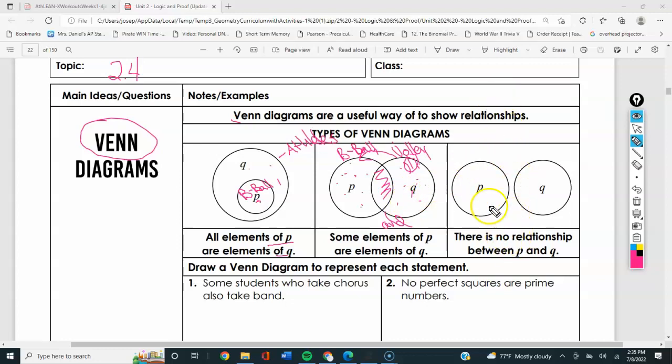And over here P and Q, we could put like if you're rich, if you're a teacher. Can't be a rich teacher unless your name is Rich, I guess. I'm kidding, I get paid fine, okay? Don't spread any rumors. But these are two things that have no relationship. No one who's in P also is in Q.